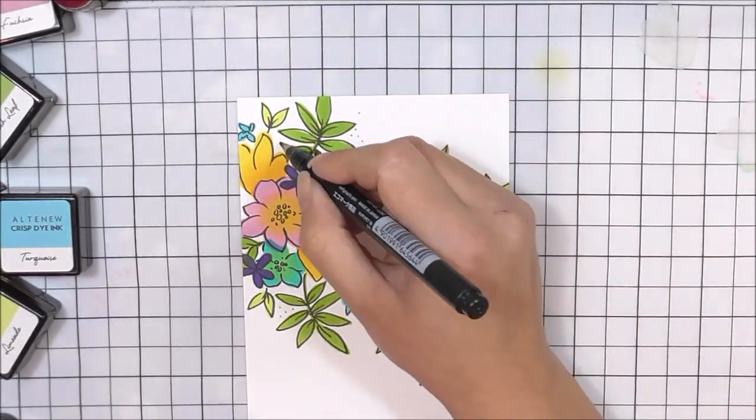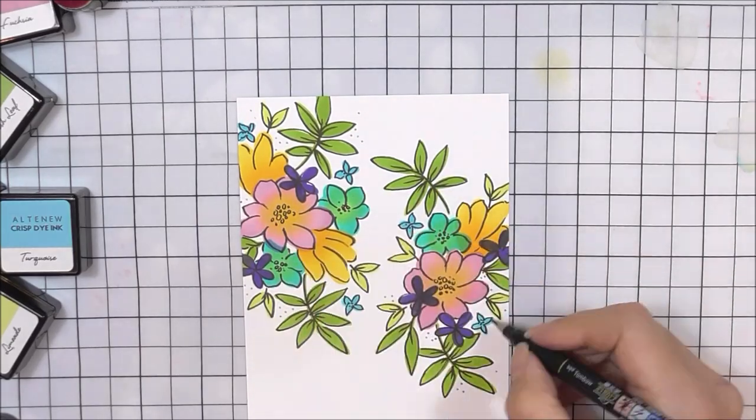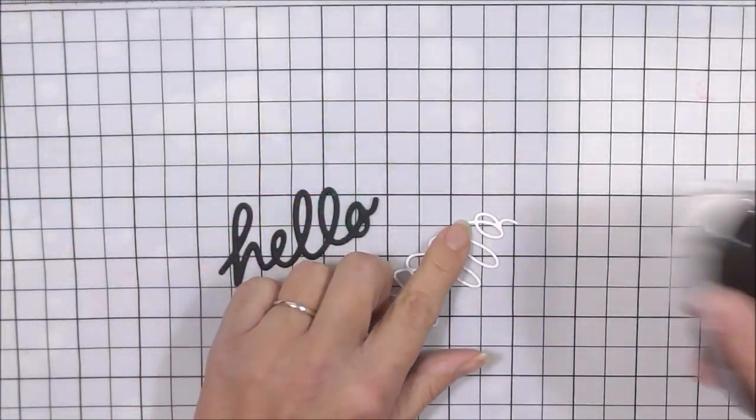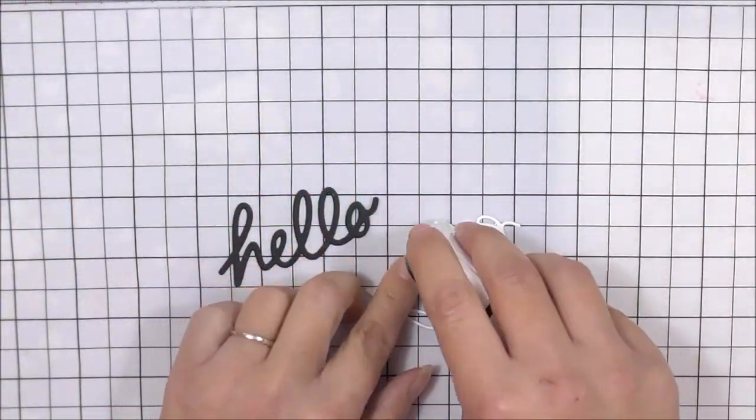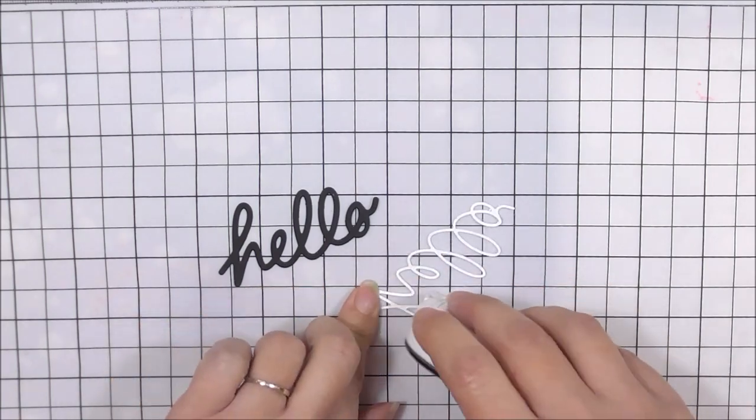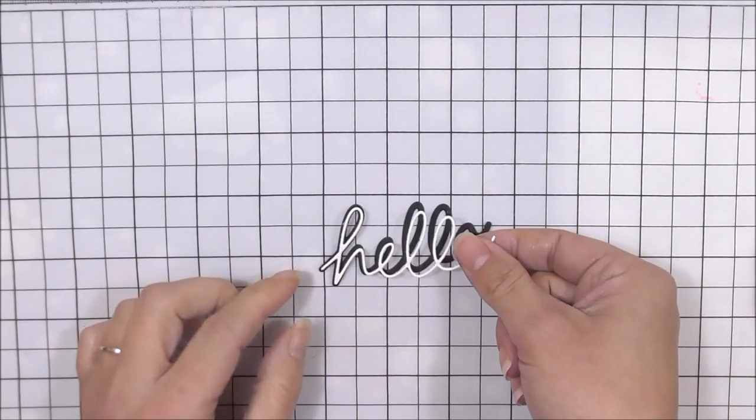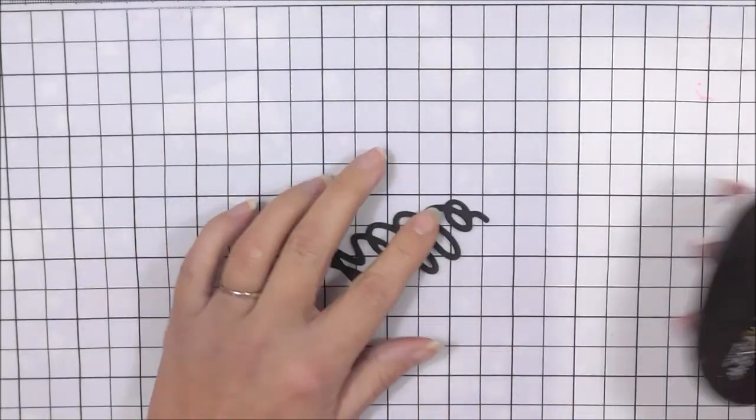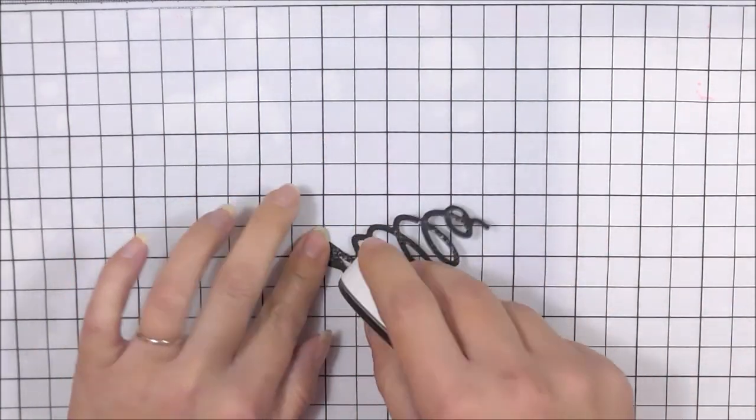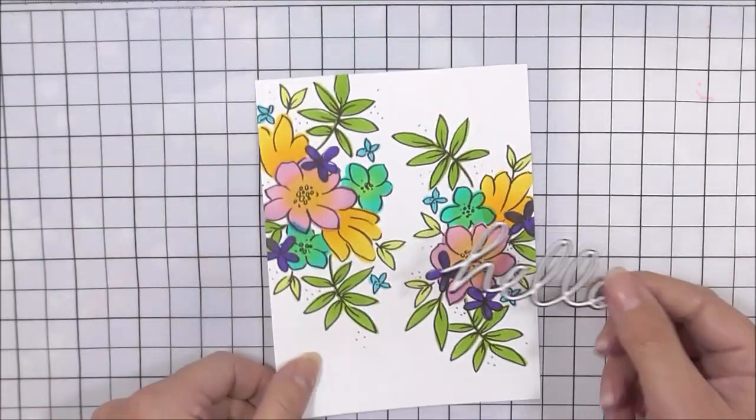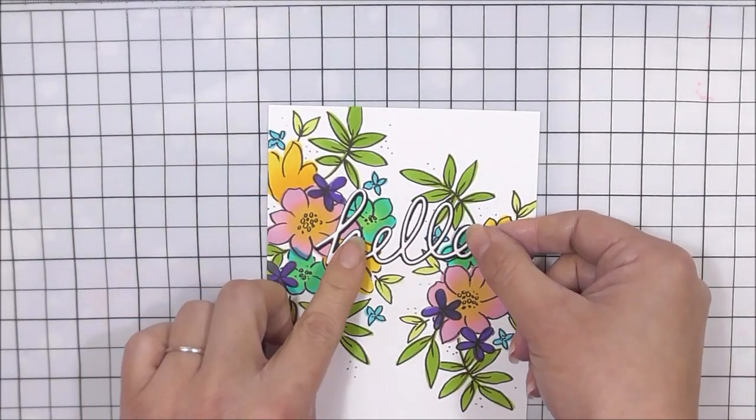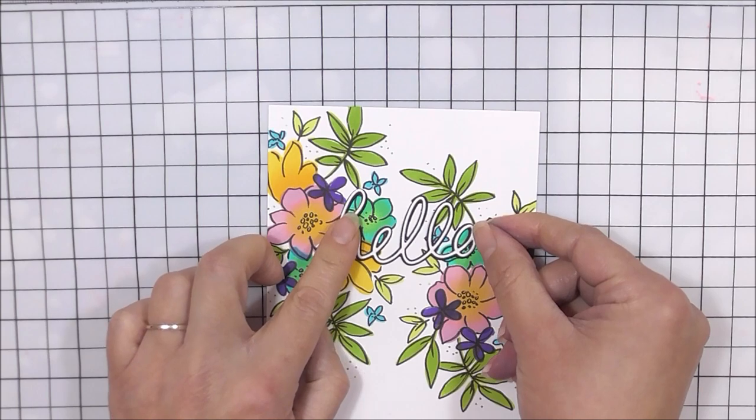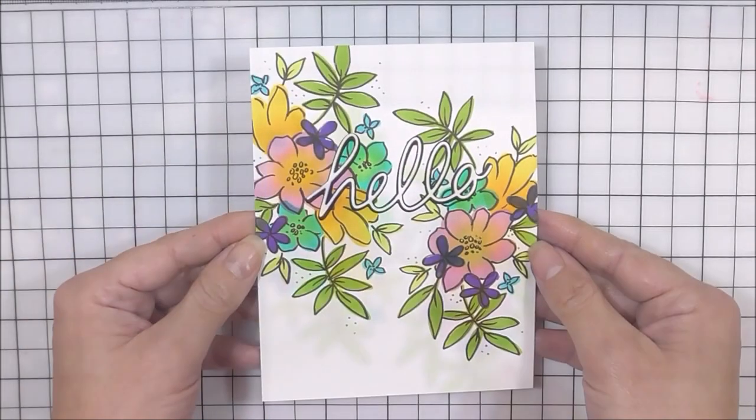Once I'm done with that I then added a little bit more detail by just adding a few little dots here and there with my fine liner pen. For my sentiment I'm using the handwritten hello die set. I've cut this out of some white cardstock and also some black cardstock and I'm popping the smaller one with the white cardstock on top of the black one just to add more of a shadow to it and I'm just going to pop this into place onto my card base.